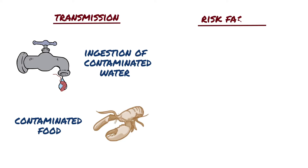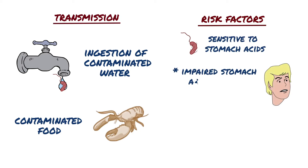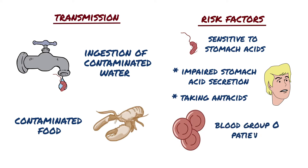Though Vibrio cholerae survive well in their aquatic environment, it is sensitive to stomach acids. So persons with impaired stomach acid secretion or who are taking antacids are at higher risk of infection. Another risk factor is blood group O — individuals with O positive or O negative blood groups are more likely to be infected with cholera.